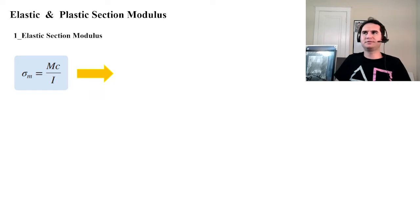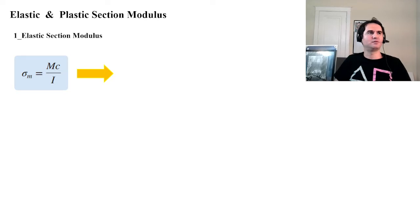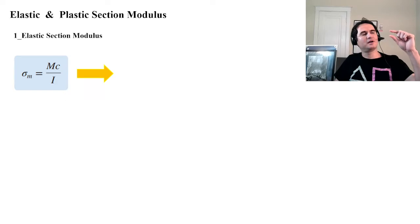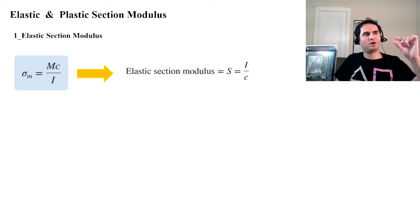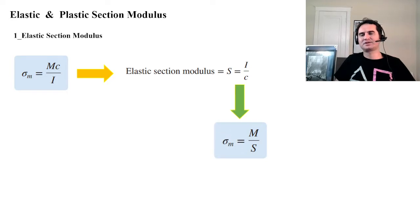The first category is elastic section modulus. From chapter 6, sigma maximum is bending moment times C over moment of inertia, and C is half of the height of the section. So elastic section modulus is defined as capital S, which is moment of inertia over C — the half height of the section. In that sense, sigma maximum equals M over S.